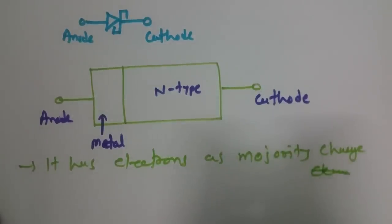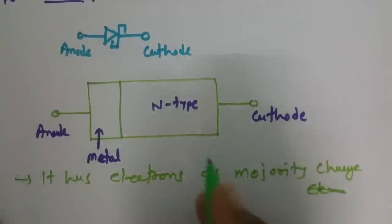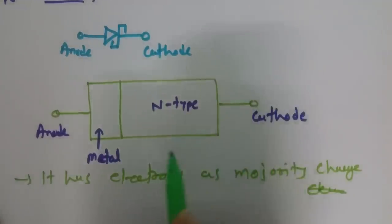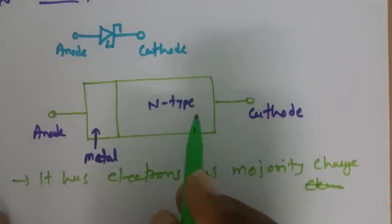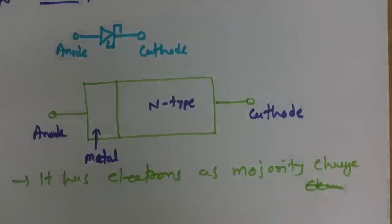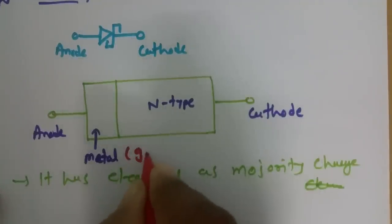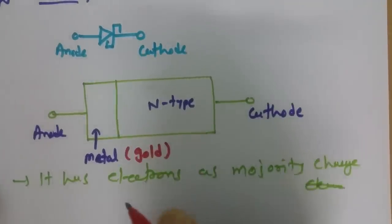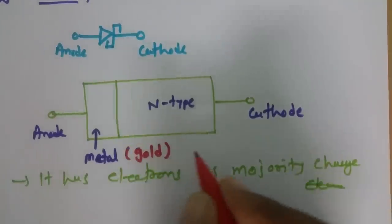Ultimately, this Schottky Barrier Diode has only one semiconductor layer, and that is connected with metal. For the metal, we can use gold or another highly conductive material — usually gold is used.